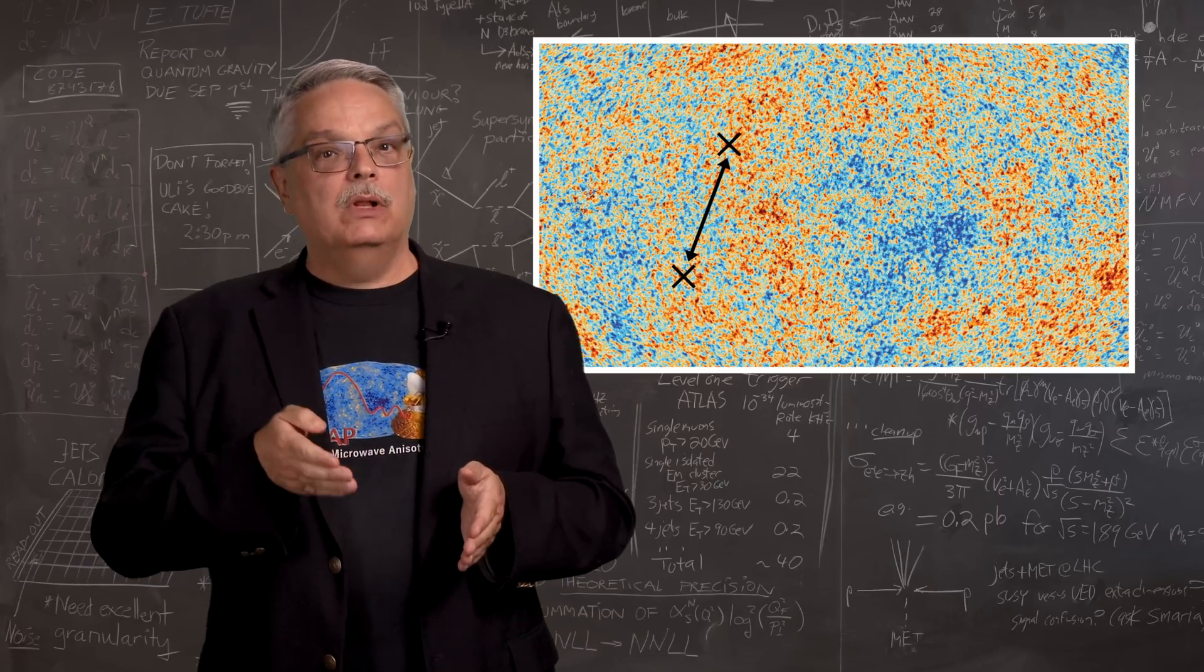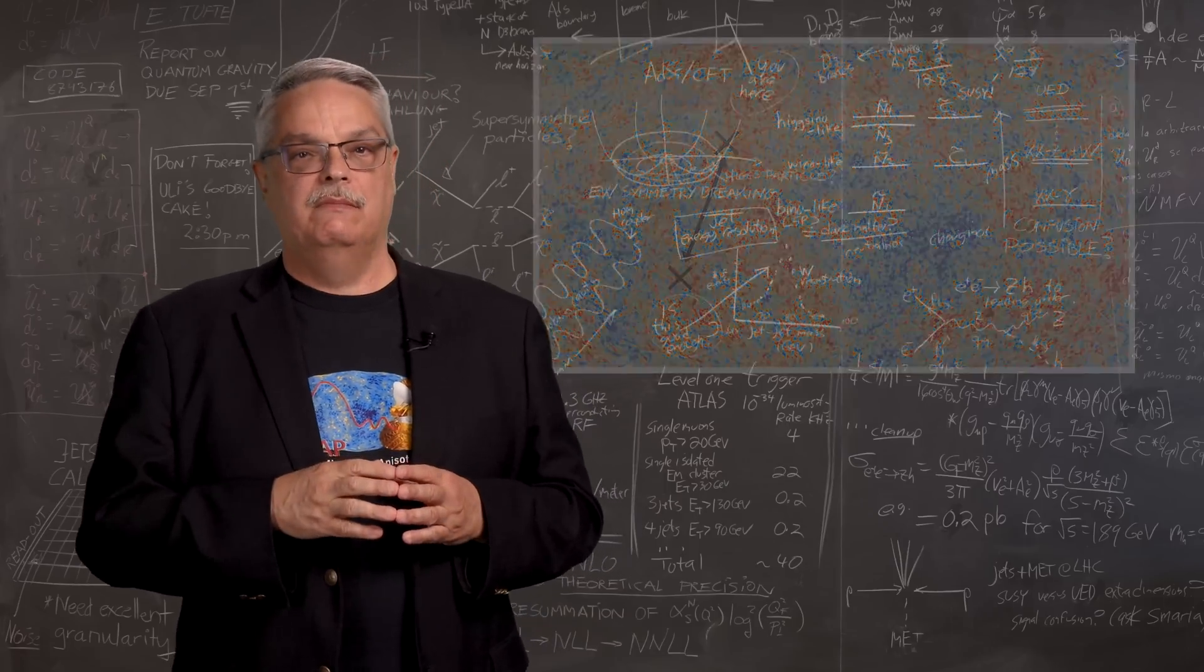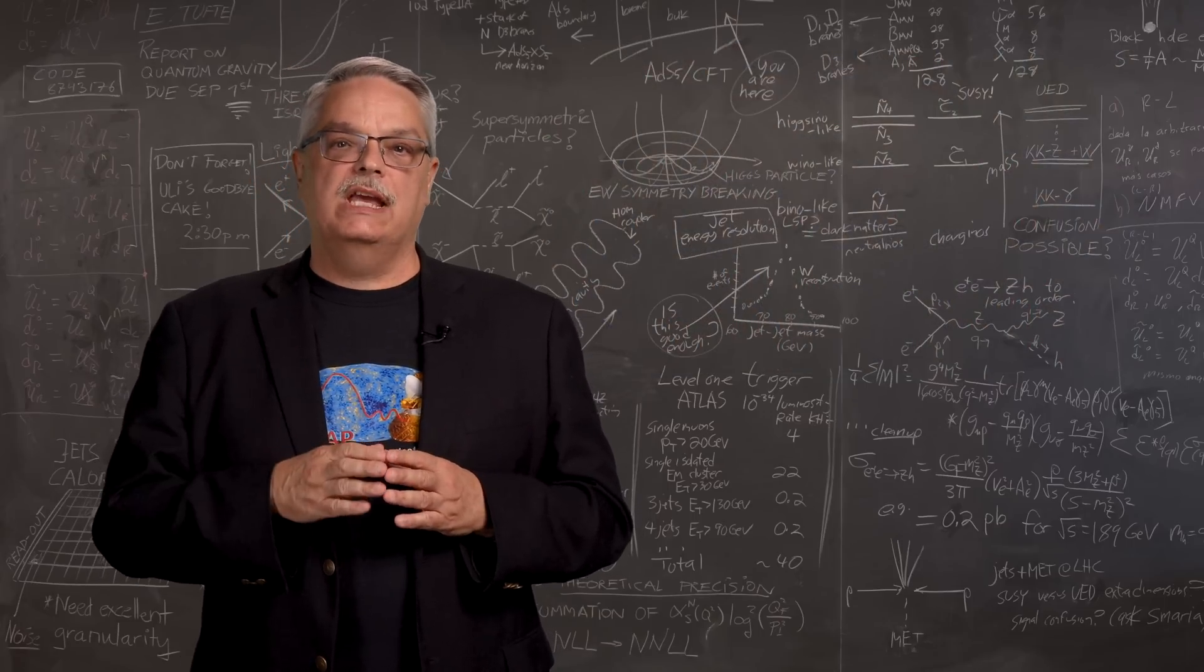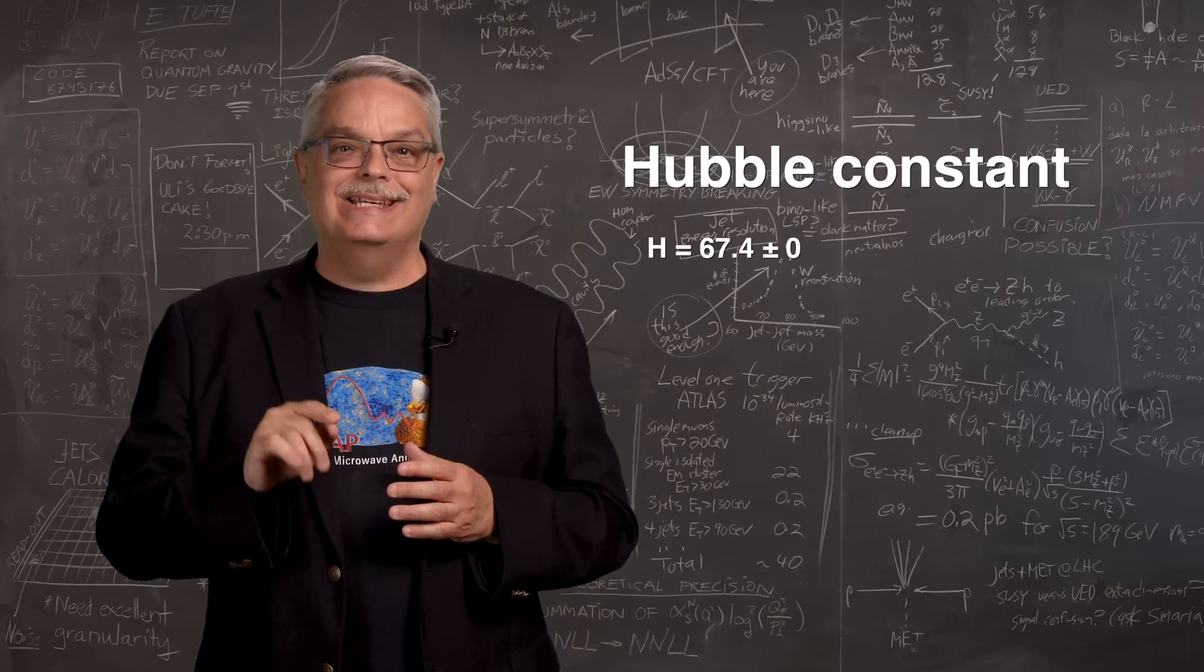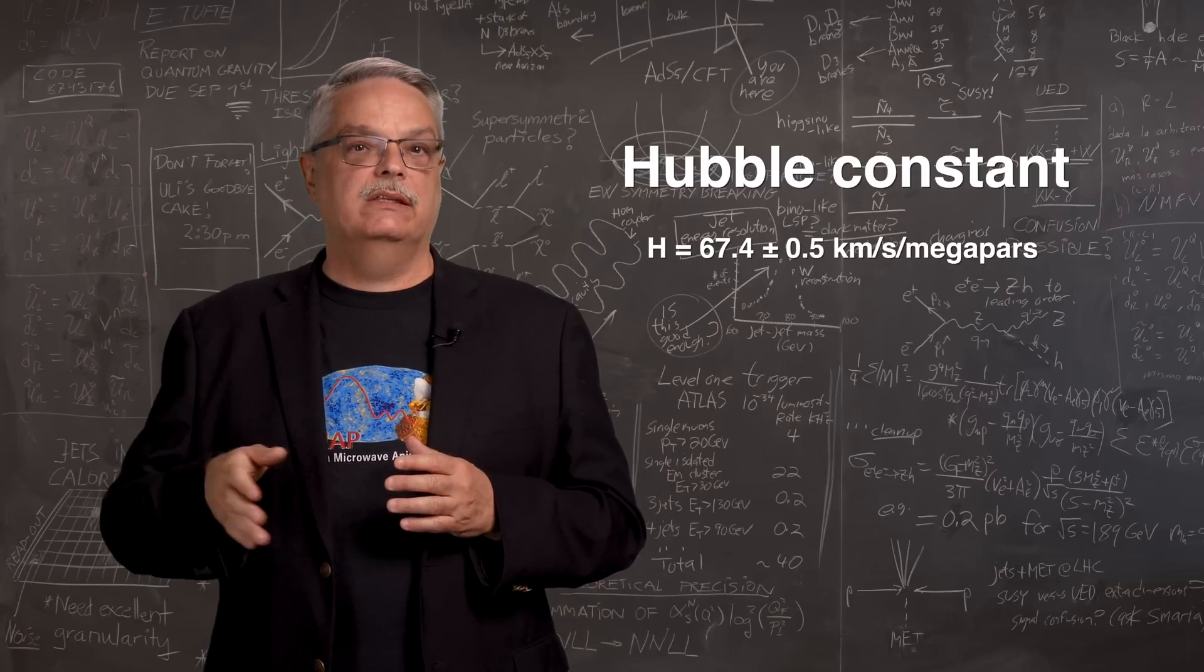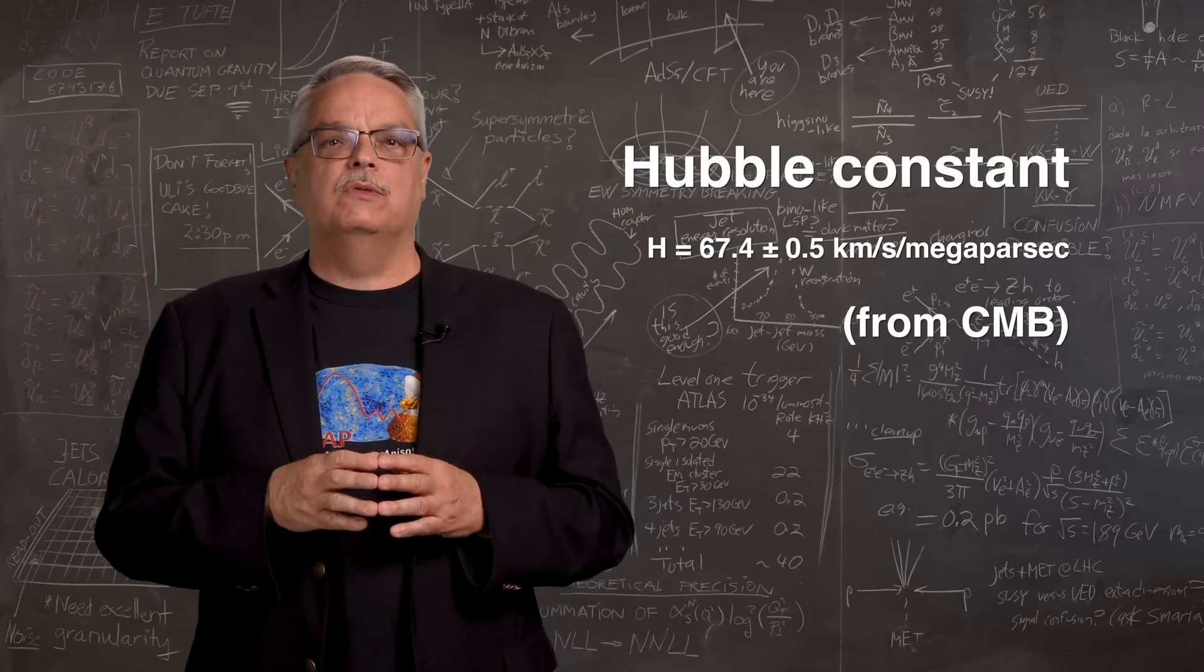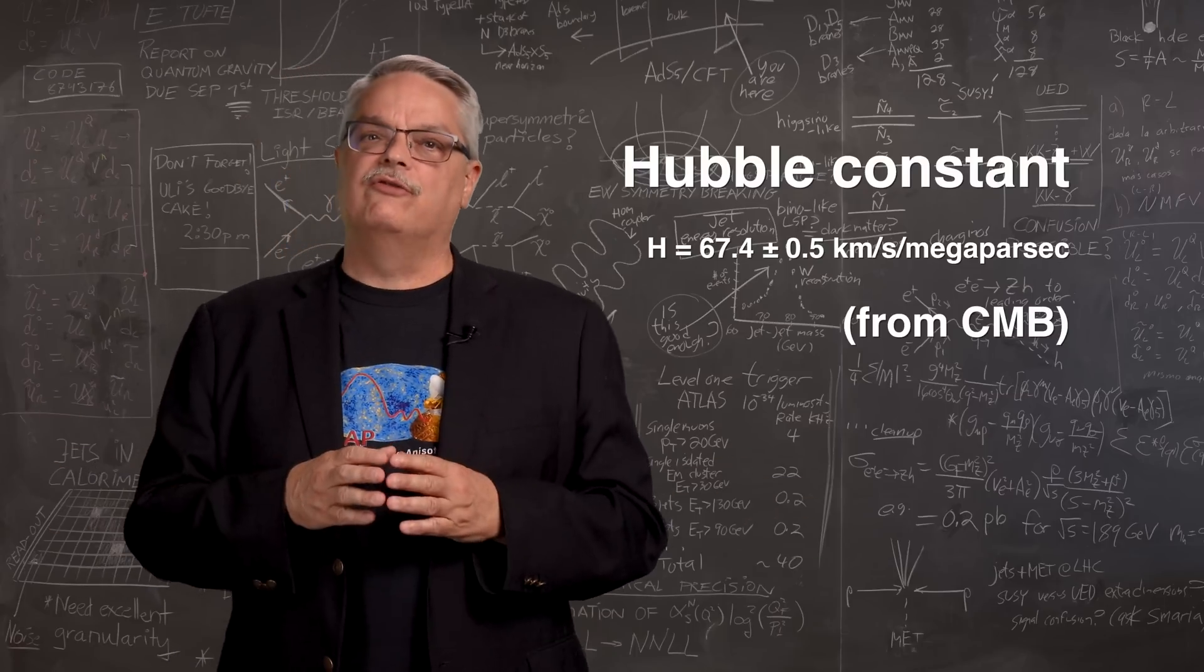And remember, the Hubble constant is a measure of how fast the universe is expanding in the present day. Using these observations of the early universe, astronomers say that the Hubble constant is 67.4 plus or minus 0.5 kilometers per second per megaparsec of distance. That's a pretty precise measurement with an uncertainty of less than one percent. So that's the first measurement.